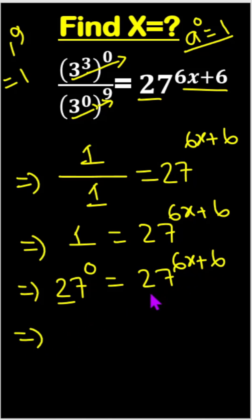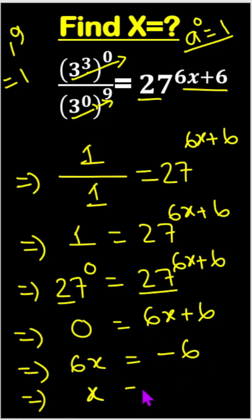Now look, both bases are the same, so the powers must be equal: 0 equals 6x plus 6. We can write 6x equals negative 6. Dividing both sides by 6, we get x equals negative 1. This is our answer: x equals negative 1. Thank you.